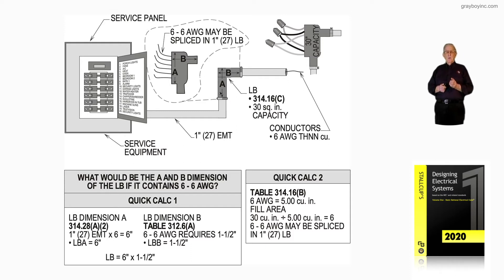Now, notice in calculation two, table 314.16B, six AWG size conductors would have a cubic inch rating of five. So, the fill area, 30 square inch area divided by five cubic inch would be six.